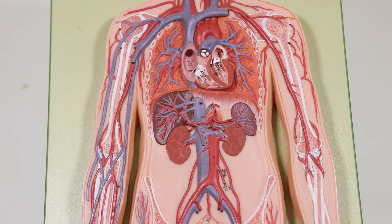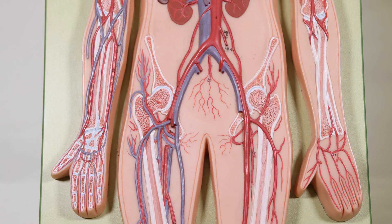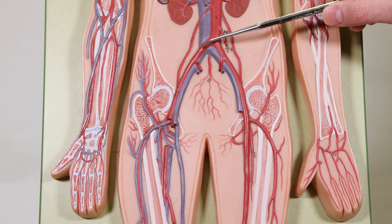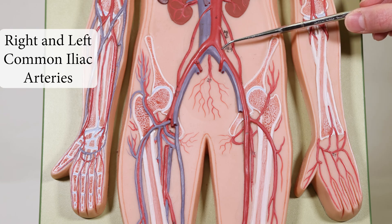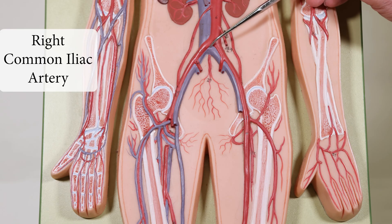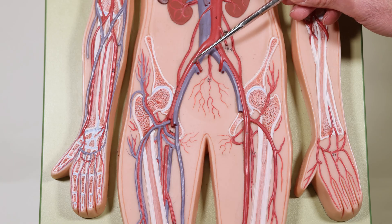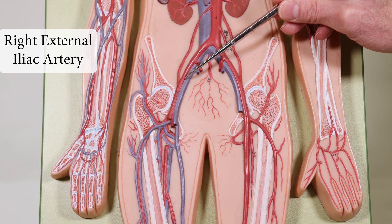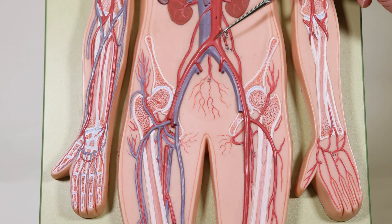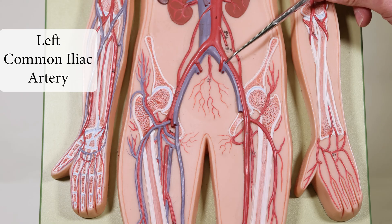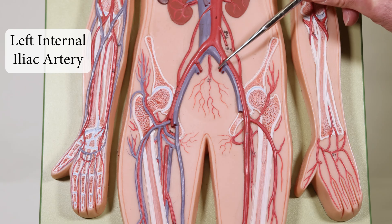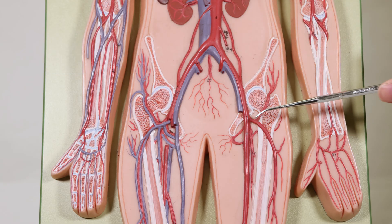Now with a better view, you can see that the abdominal aorta coming down splits into two — the right and left common iliac arteries. Following the right common iliac artery, it splits into the right external iliac artery and the right internal iliac artery. The same goes for the left side: the left common iliac artery splits into the left external iliac artery and the left internal iliac artery.